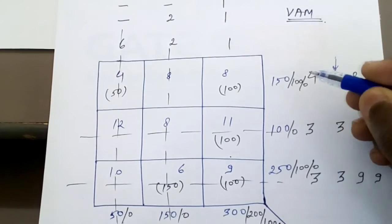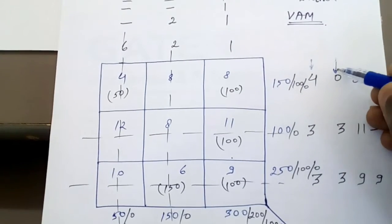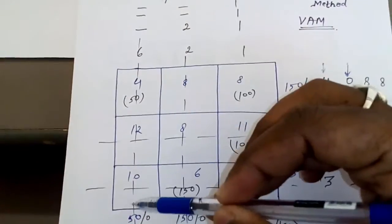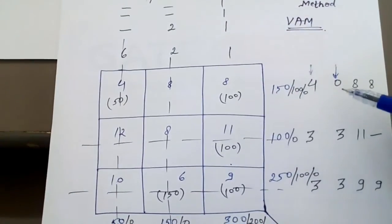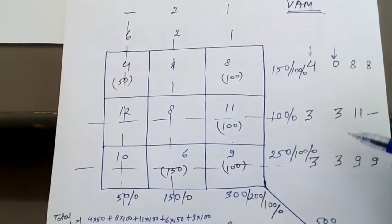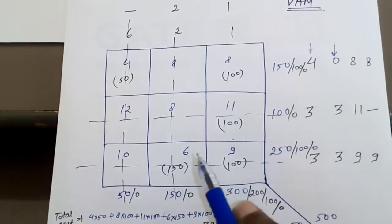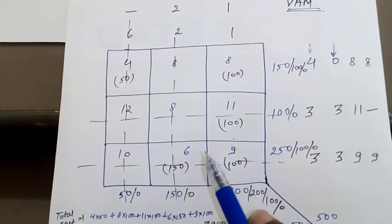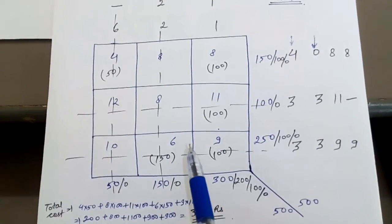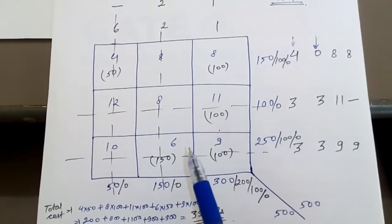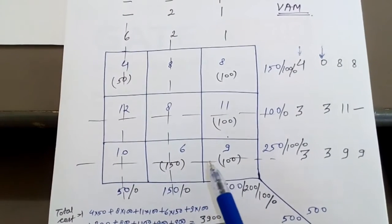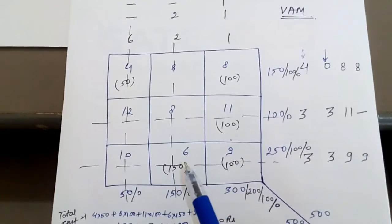The maximum penalty is 3, occurring in two places. Where there is a tie, select the row with the minimum element. Corresponding to one 3 we have 8 and 11, and for the other 3 we have 6 and 9. The minimum of all is 6, so allocate in that cell. Supply is 150 and demand is 250, so 150 is supplied. Write 150, cross out this row, and the remaining demand drops from 250 to 100.